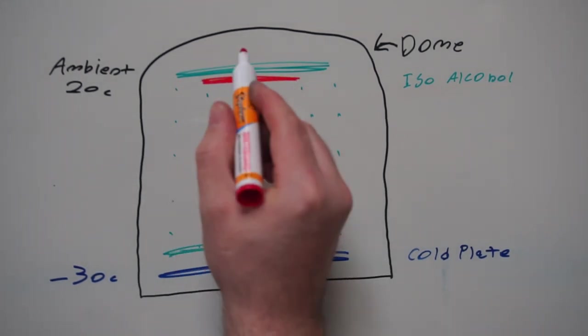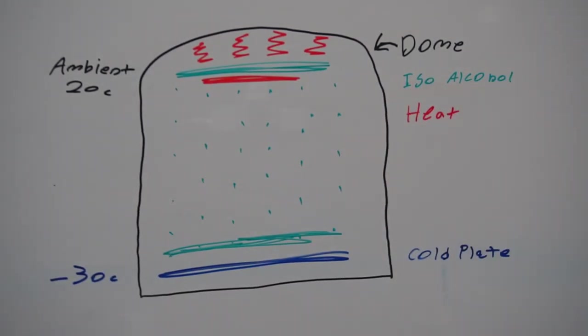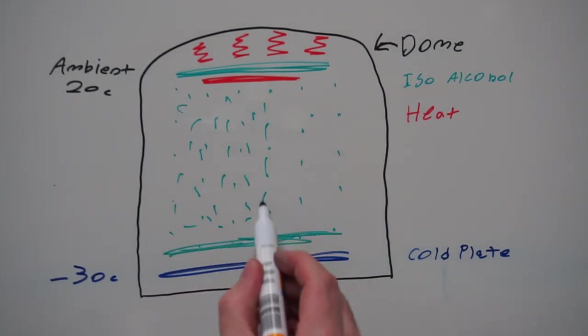If we add a heat source at the top of the chamber we can saturate the air with even more alcohol to improve visual quality of the trails.